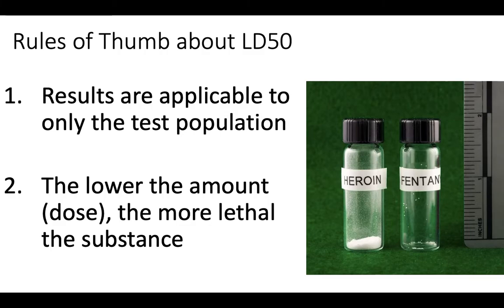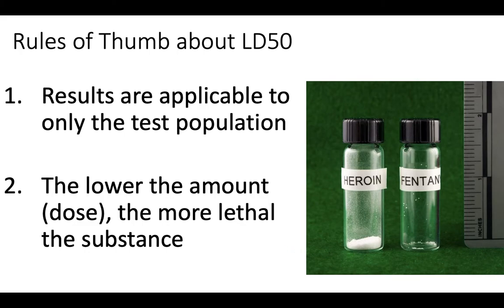A general rule of thumb about LD50: the lower the dosage required, the more lethal the substance. If the amount needed to kill half the population is very small, that substance is very toxic. For example, this is the LD50 for heroin versus fentanyl—fentanyl requires a much smaller dosage, and as you may know, fentanyl is much, much more toxic and lethal to humans than heroin. Because this test is done within a test population, results can only be strictly applied to that population—LD50 will vary depending on which humans or organisms are tested.